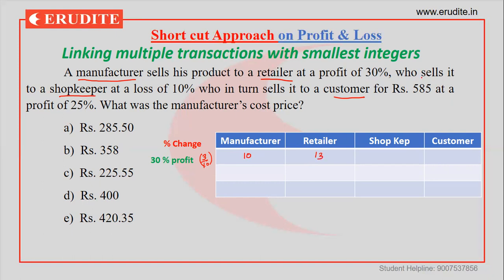Next, the retailer sells to the shopkeeper at a loss of 10%. Here 10% loss — as a fraction it is 1 by 10. So if the retailer's price is 10, then the shopkeeper's price should be 9. Now if I link these three of them together, we can find the combined values.